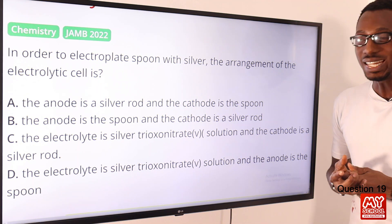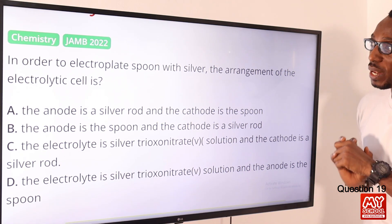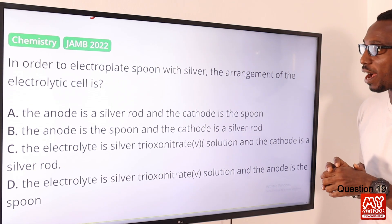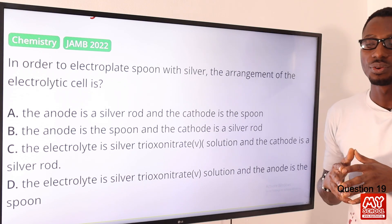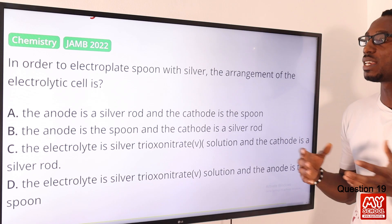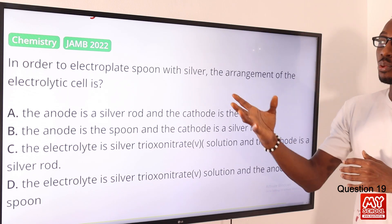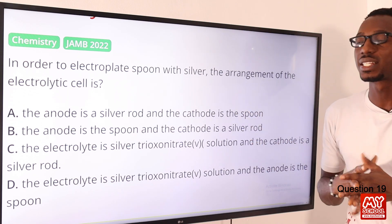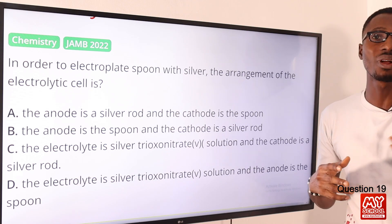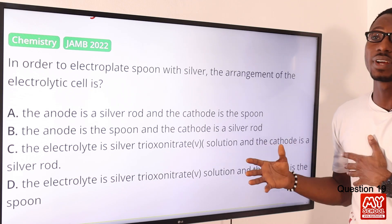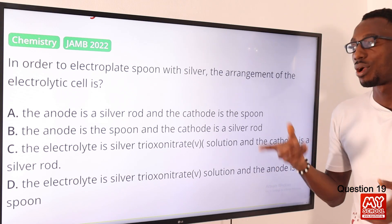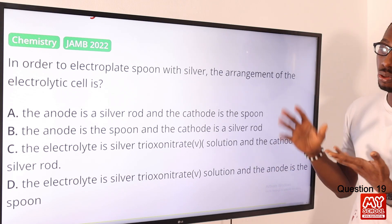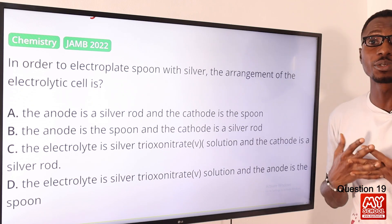Question nineteen: in order to electroplate a spoon with silver, the arrangement of the electrolytic cell is what? The spoon that you want to coat is your cathode, and the anode of the electrolytic cell will be the silver metal. We have the right compilation in option A.